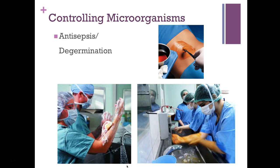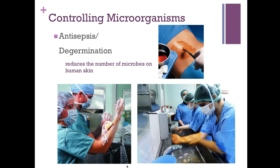Antisepsis, also called degermination, refers to reducing the number of microorganisms on human skin. When surgeons prepare for surgery, they go through this decontamination process on their living tissue. They scrub their skin or immerse it in specific chemicals to reduce as many microorganisms as possible. They can also use alcohol and a brush to get under their nails — that is mechanical friction. Iodine may be used as well.